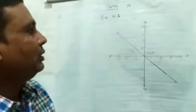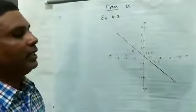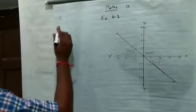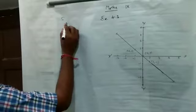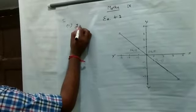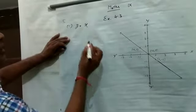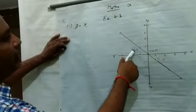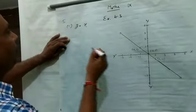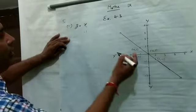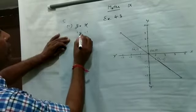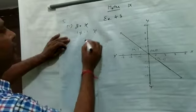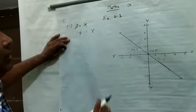इसको हमको देखना है एक graph पर है या नहीं है. First है y is equal to x. इस graph पर है या नहीं? x की value है minus 1 और y की value है 1. 1 और minus 1 equal नहीं है, इसलिए यह graph पर नहीं होगा.